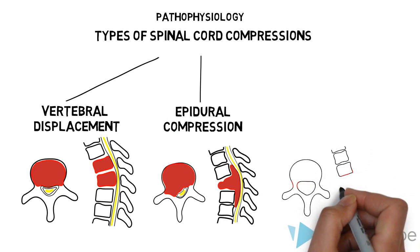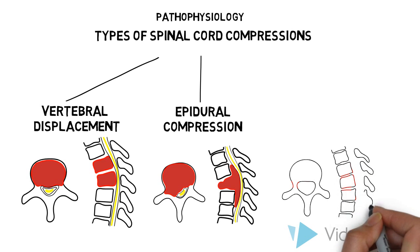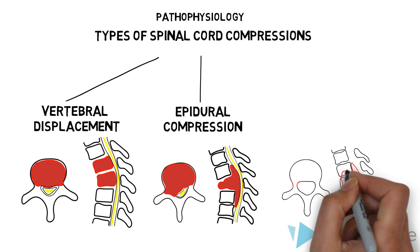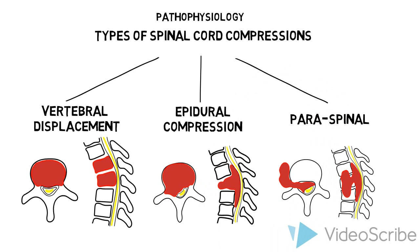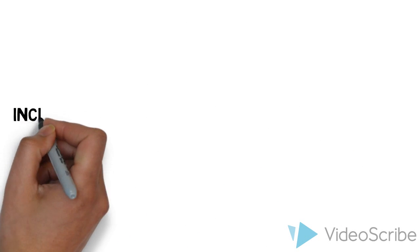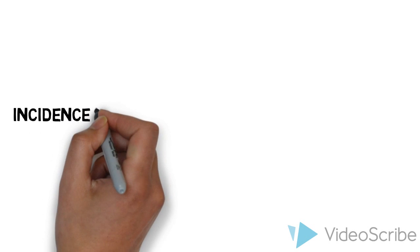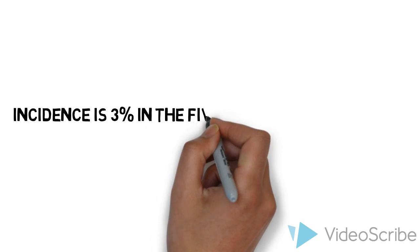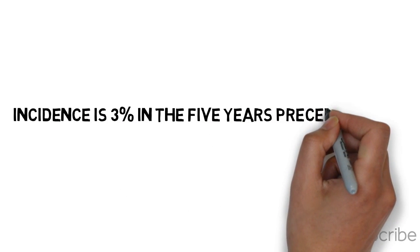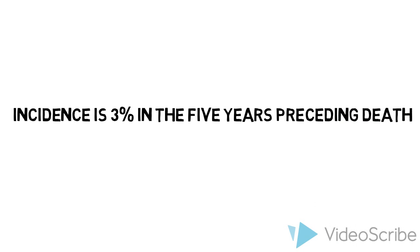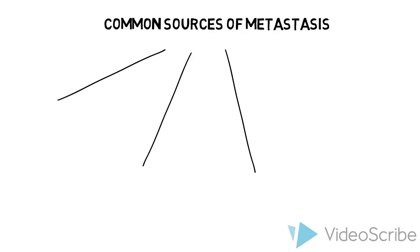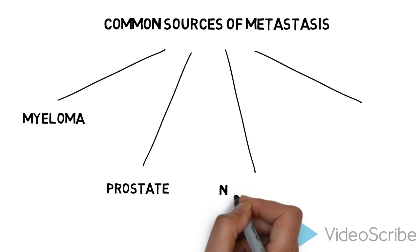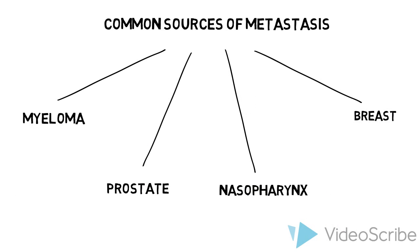Alternatively, 10% of the time, tumors can grow paraspinally and invade through the foramen to cause similar pressure effects. Spinal cord compressions are common. Population-based studies show the incidence is approximately 3% in the 5 years preceding death from cancer. Obviously, this depends on the type of cancer. Incidence is highest in myeloma, prostate, nasopharynx, and breast cancers.